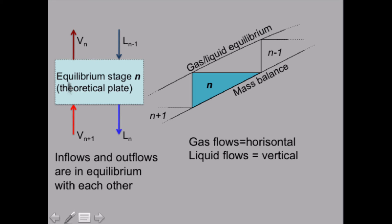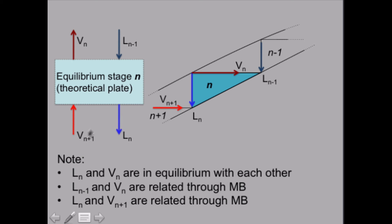Let's draw these different flows in this diagram. This flow coming to equilibrium stage n is the line coming to triangle n. Gas fluxes move upwards — the n+1 flux moves in this direction, up to the next stage.